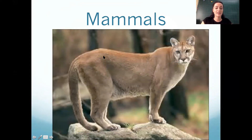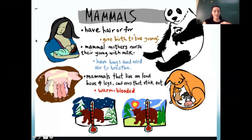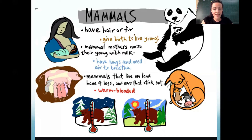When mammals give birth to babies, they're not in an egg — they're already alive. Mammal mothers nurse their young with milk.